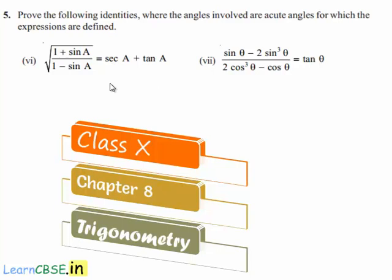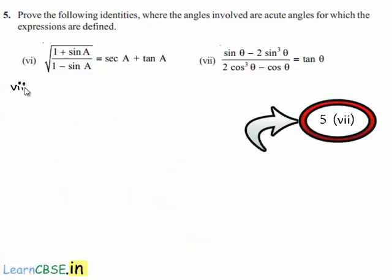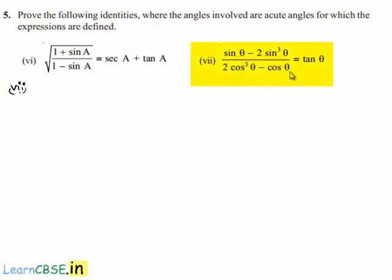Moving on to the seventh bit of the fifth problem, we are asked to prove that sin theta minus 2 sin cubed theta divided by 2 cos cubed theta minus cos theta is equal to tan theta.